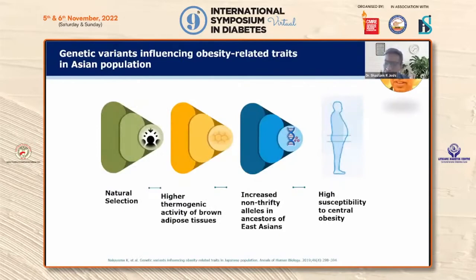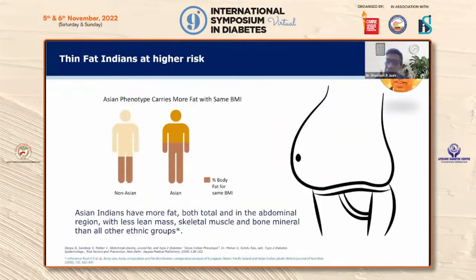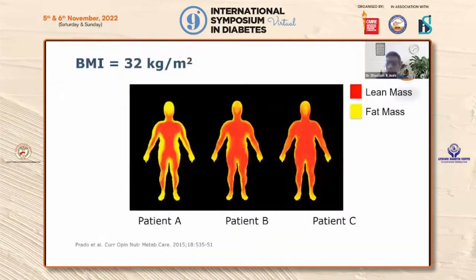In the Asian population from India, there is natural selection and a clear genetic variant that influences obesity-related traits. This leads to higher thermogenic activity of brown adipose tissue, increased non-thrifty alleles in ancestors of East and South Asians, and a predilection to central obesity. We are thin-fat Indians — the Asian phenotype carries more fat with the same BMI compared to the non-Asian phenotype. Asian Indians have more fat — both total and ectopic — with less lean mass, skeletal muscle mass, and bone mineral density, leading to an explosion of type 2 diabetes and NCDs in South Asia.